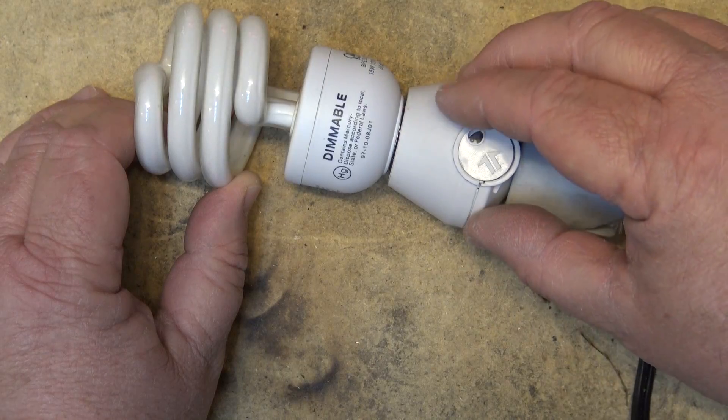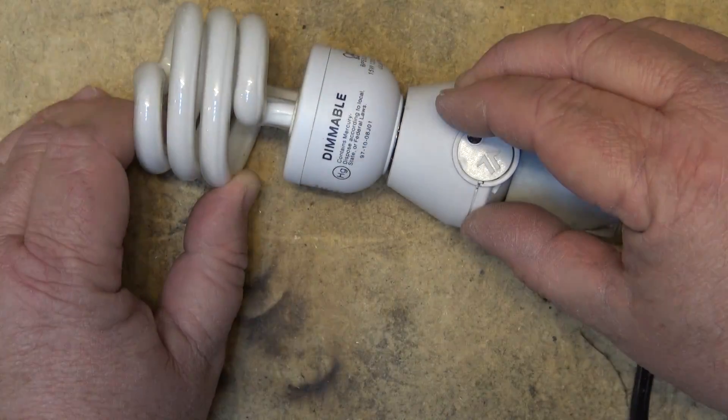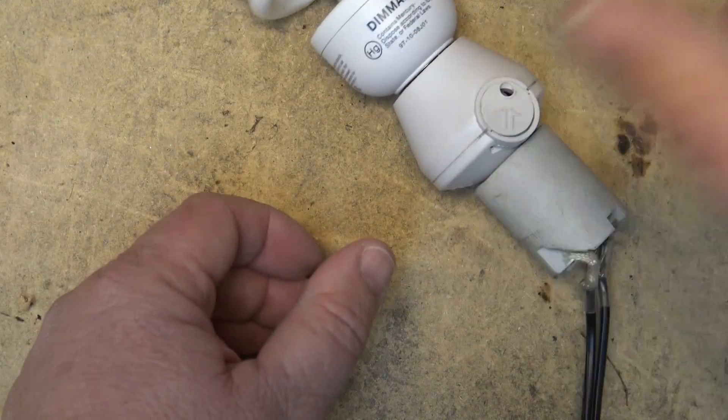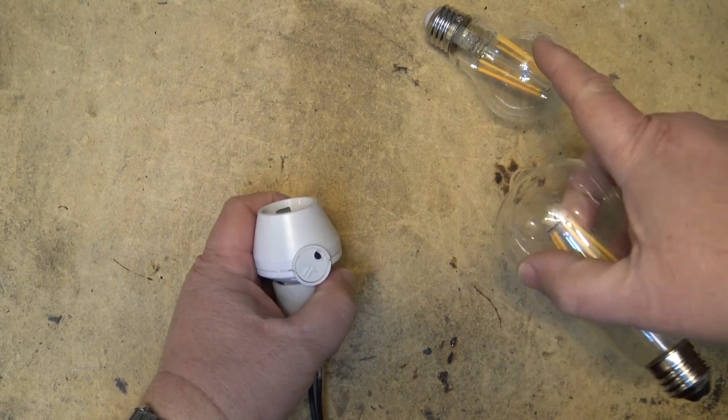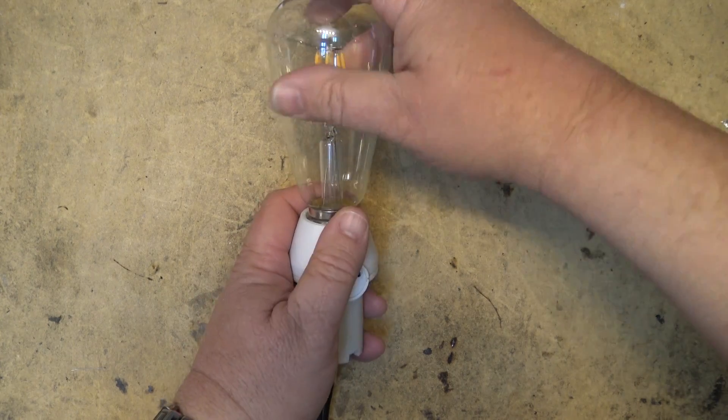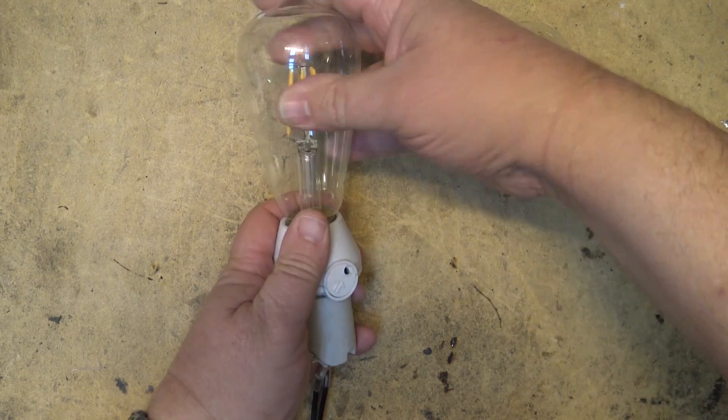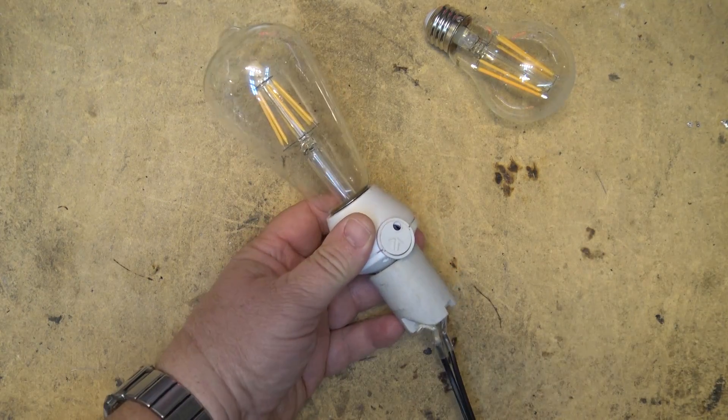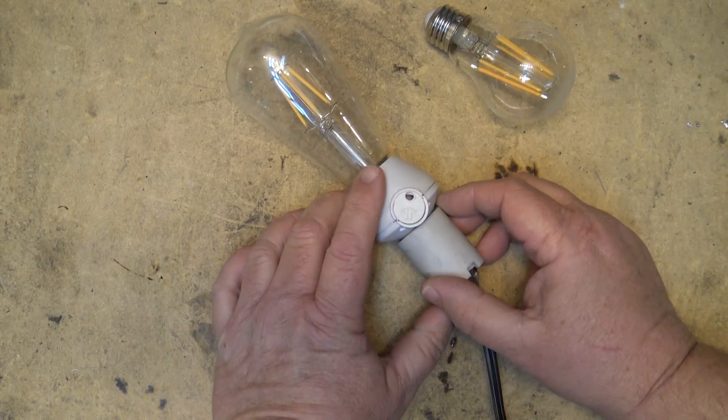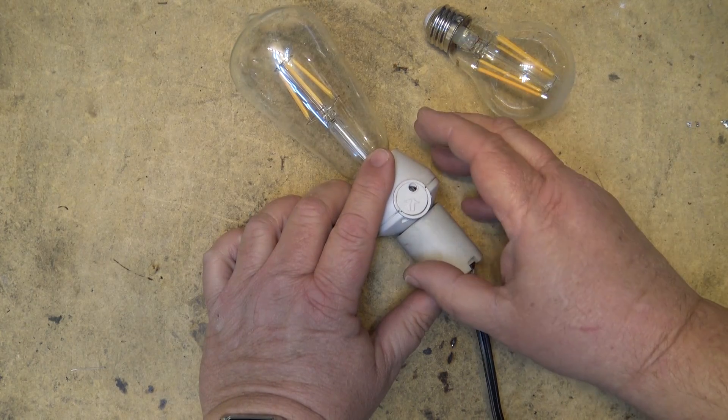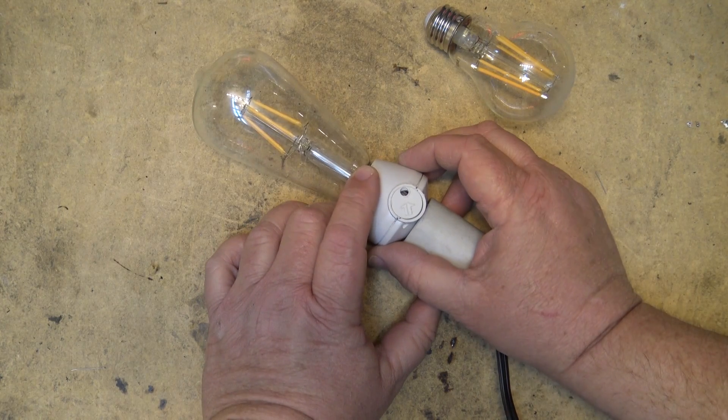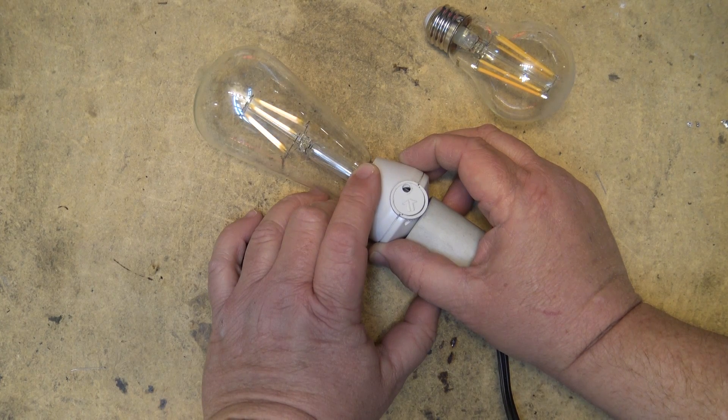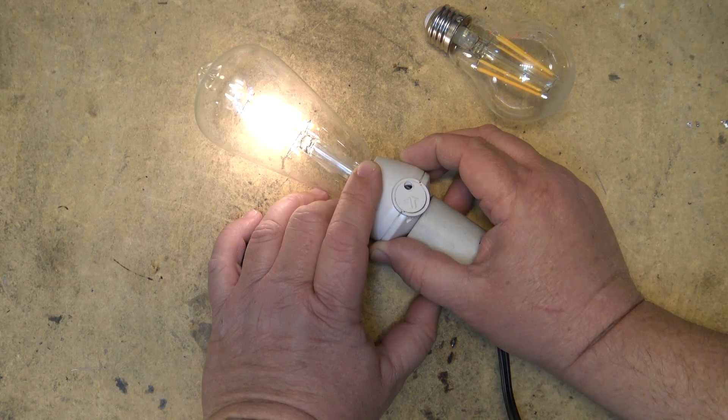Let's try it with a dimmable LED. I have two types - the Phillips warm glow and a conventional LED. I'll turn on the power and what do you know, this one actually does do the job. As it starts to dim, the light comes on and it does dim.